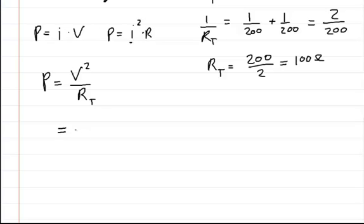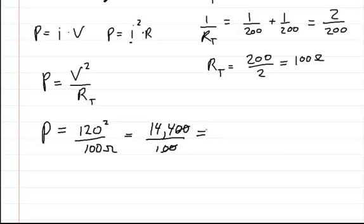So in this problem I had 120 volts squared divided by 100 ohms. So that's going to be 14,400 divided by 100. So the total power dissipated in this circuit is equal to 144 watts.